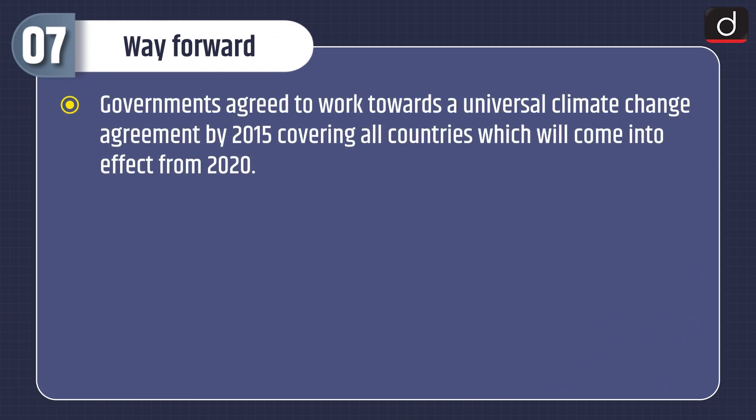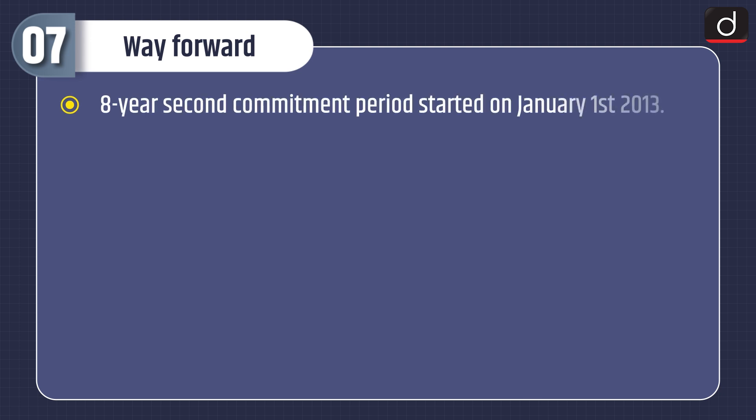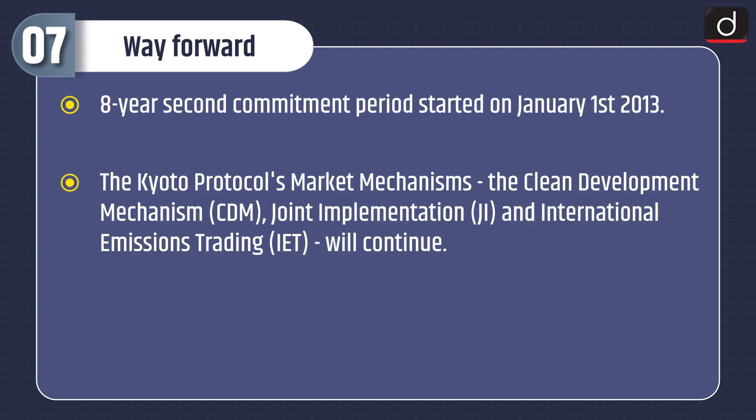Governments agreed to work towards a universal climate change agreement by 2015, governing all countries, which will come into effect from 2020. The Kyoto Protocol is the only existing and binding agreement under which developed countries undertake quantitative commitments to cut greenhouse gases. It was amended at the Doha Conference in 2012 so that it could seamlessly continue into an eight-year second commitment period starting on January 1st, 2013. The Kyoto Protocol's market mechanisms — the CDM, joint implementation, and international emissions trading — will continue.